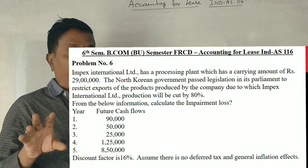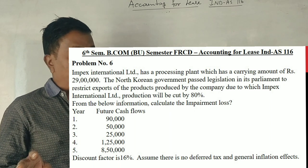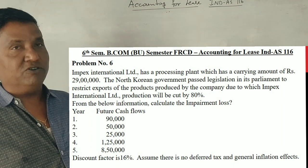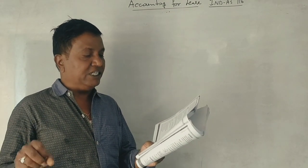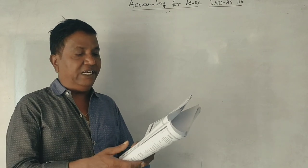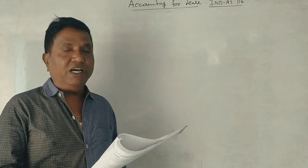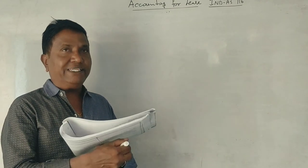Five years of future cash inflows: Year 1 is 90,000, Year 2 is 50,000, Year 3 is 25,000, Year 4 is 1,25,000, and Year 5 is 8,50,000. Discount factor is 10%. Assuming there is no deferred tax and general inflation effects. Now we calculate the impairment loss.